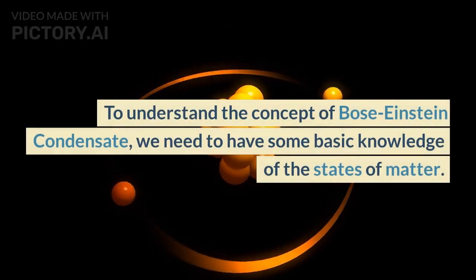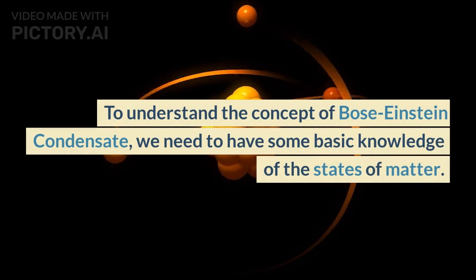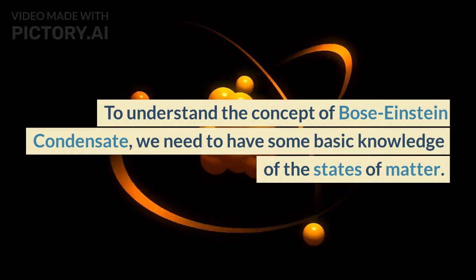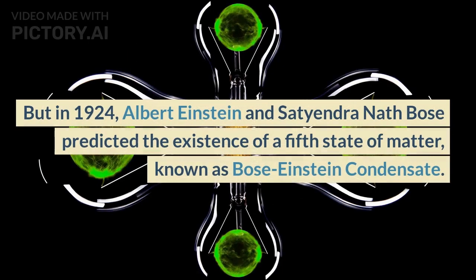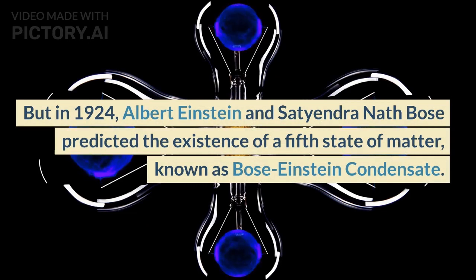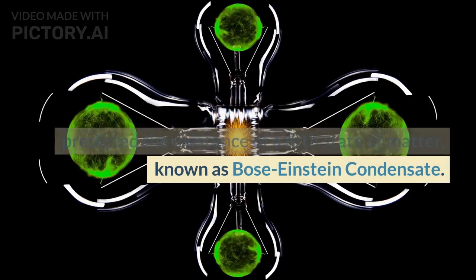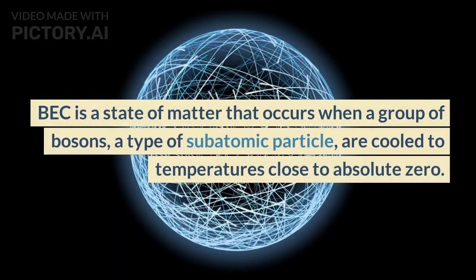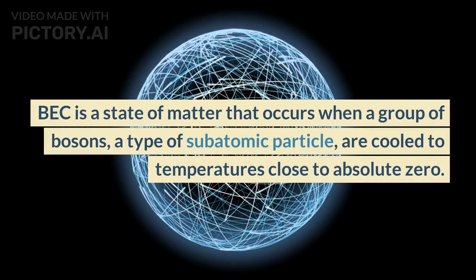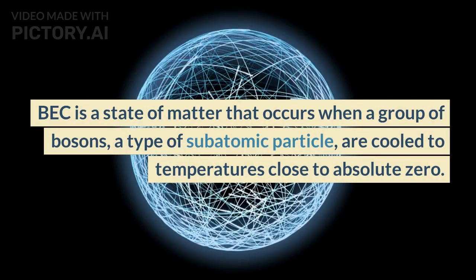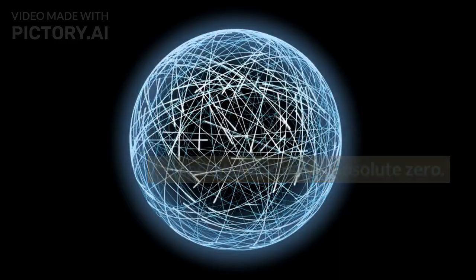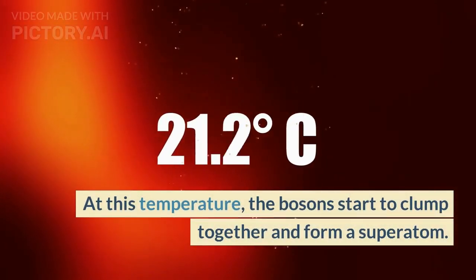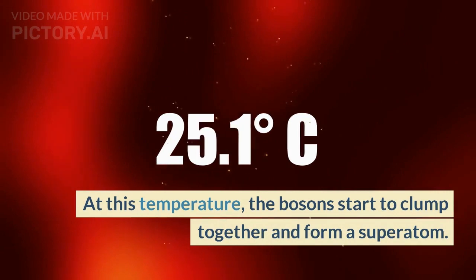To understand the concept of Bose-Einstein condensate, we need to have some basic knowledge of the states of matter. But in 1924, Albert Einstein and Satyendra Nath Bose predicted the existence of a fifth state of matter, known as Bose-Einstein condensate — a state that occurs when a group of bosons, a type of subatomic particle, are cooled to temperatures close to absolute zero. At this temperature, the bosons start to clump together and form a super atom.